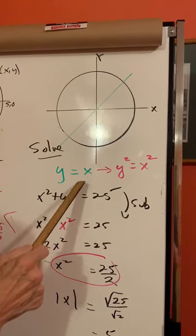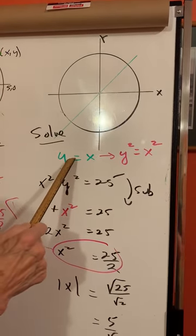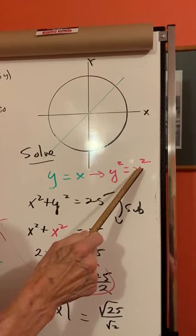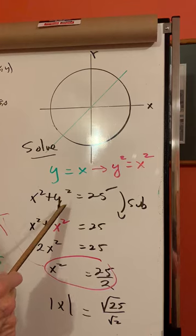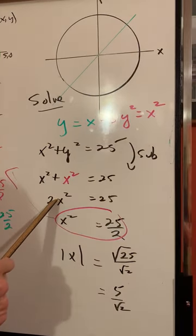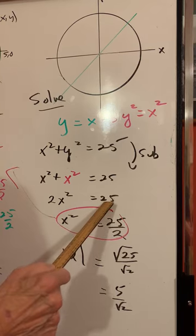And we want to substitute it in here. So we square the y and we square the x. Now we're going to take and replace the y squared with the x squared. I have 2 x squares. Divide both sides by 2.